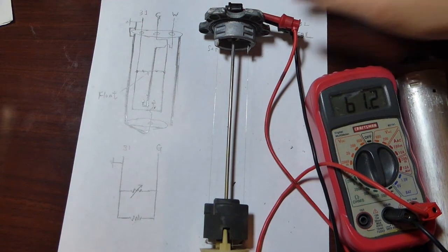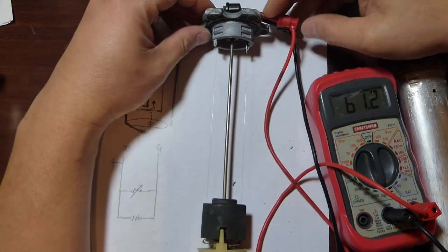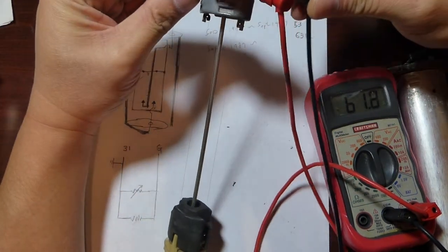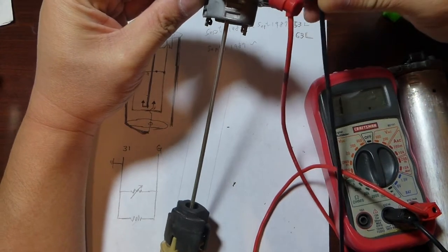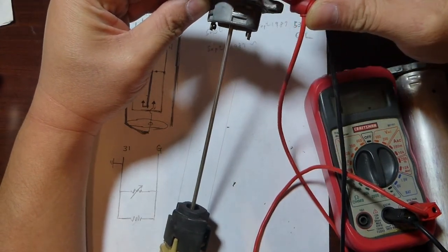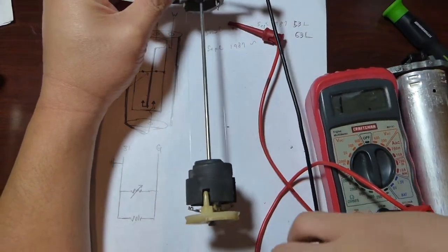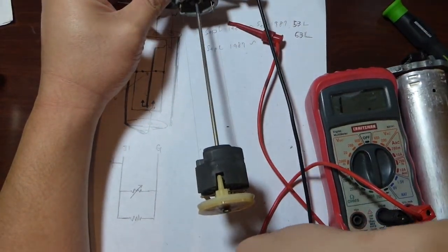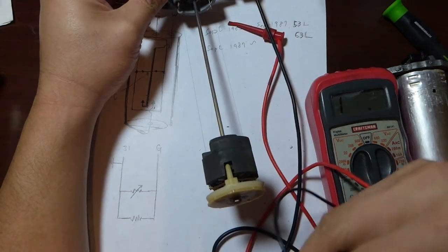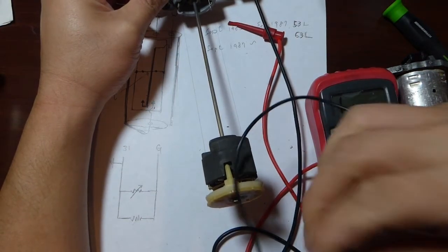That would turn on the low fuel warning light bulb. Let's see if we can demonstrate this in action. Let me connect one to the terminal W and the other one to the bottom screw.